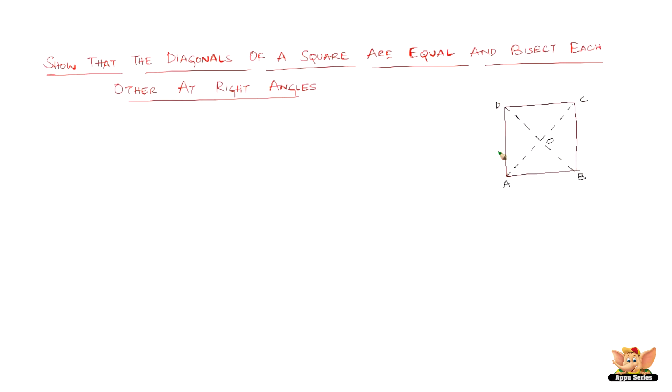So now ABCD is a square and we have the diagonals AC and DB. We need to show that they are equal and they also bisect each other at right angles. So here you know we need to get a right angle. So this is what we need to prove.